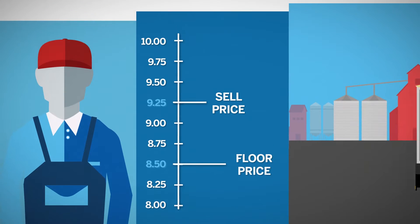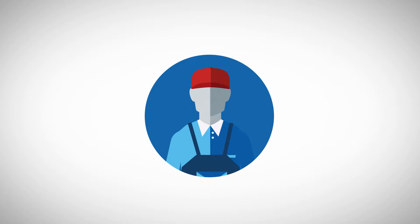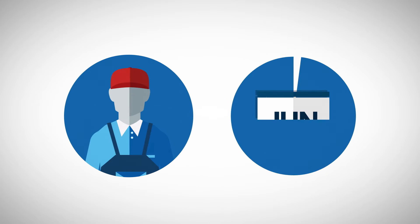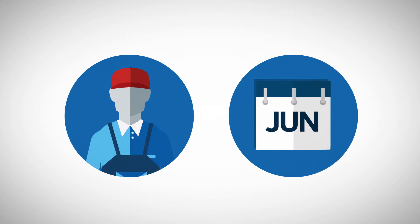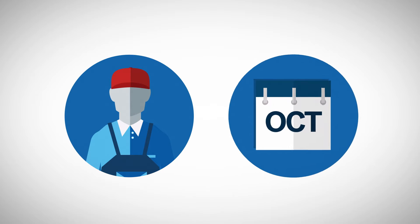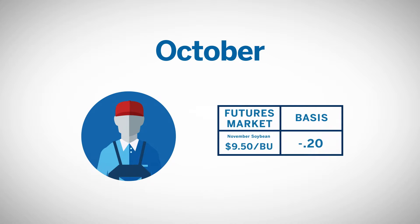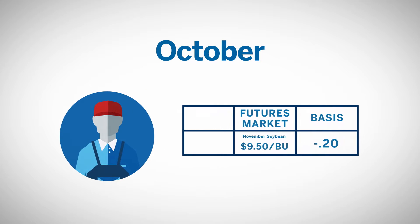Let's assume that it's spring and a soybean producer has just completed his planting and is concerned that soybean prices may decline by the time he harvests his beans in October. The normal basis for his area in October is $0.20 under the November soybean futures price, which is currently $9.50 a bushel. This would give him an expected selling price of $9.30, which is the November futures price minus the expected basis.